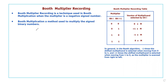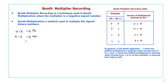Let us take one example to understand this concept very clearly. Suppose the given two numbers are +12 multiplied by -2. The first number we call the multiplicand, and the second number is the multiplier, indicated with small m.